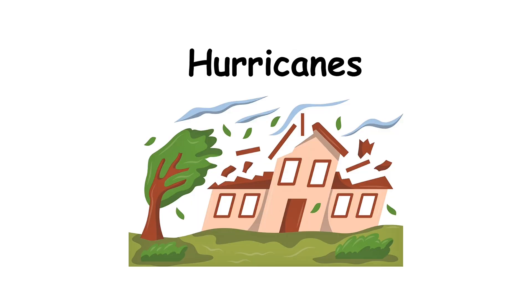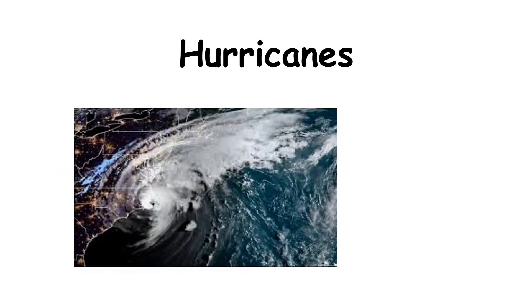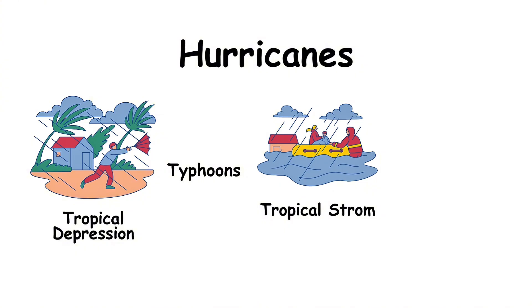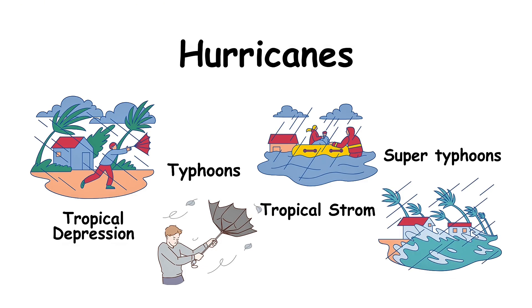Scientists monitor hurricanes using satellites, weather radar, and ocean buoys. These tools track storm formation, intensity, and movement, helping to provide early warnings. One of the deadliest hurricanes in history was the 1970 Bhola Cyclone in Bangladesh. Types of tropical storms include tropical depressions — weaker systems with wind speeds less than 39 mph; tropical storms — moderate storms with winds from 39 to 73 mph; hurricanes and typhoons — strong storms with winds above 74 mph; and super typhoons and major hurricanes — extremely powerful storms with winds exceeding 150 mph.